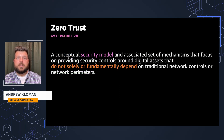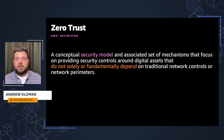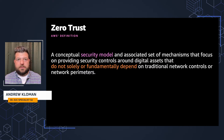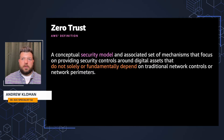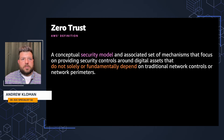Let's talk about zero trust. AWS's definition of zero trust is a conceptual security model associated with a set of mechanisms that focus on providing security controls around digital assets that do not solely or fundamentally depend on traditional network controls or network perimeters. This is not a single solution — it's not a one-size-fits-all. It's a concept. The key is not relying solely on traditional network controls or perimeters, and really defining that perimeter, that network, and that identity.